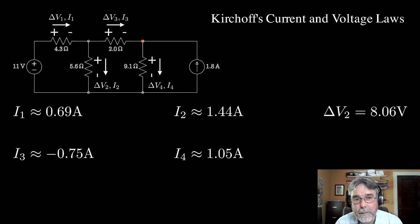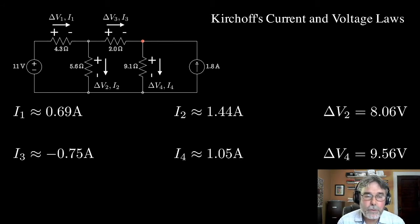And as you can see, that one is just delta V4, which is the same thing as 9.1 times I4. So I'll go ahead and calculate that guy. And that turns out to be 9.56 volts. So now we really do know everything there is to know about the circuit. I know the voltage of every node. I know the current in every branch.